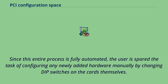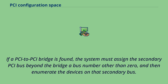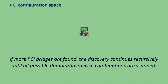Since this entire process is fully automated, the user is spared the task of configuring newly added hardware manually by changing DIP switches on the cards themselves. This automatic device discovery and address space assignment is how plug-and-play is implemented. If a PCI-to-PCI bridge is found, the system must assign the secondary PCI bus beyond the bridge a bus number other than 0 and enumerate the devices on that secondary bus. If more PCI bridges are found, discovery continues recursively until all possible domain/bus/device combinations are scanned.